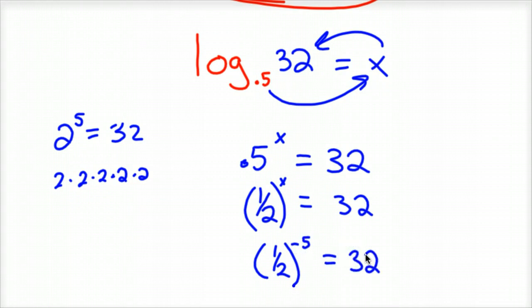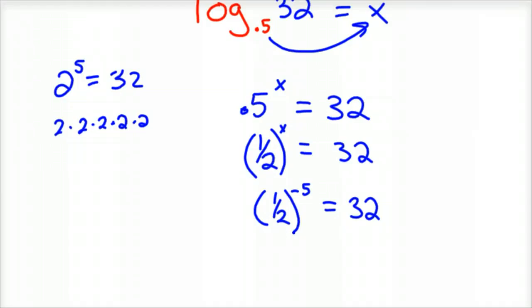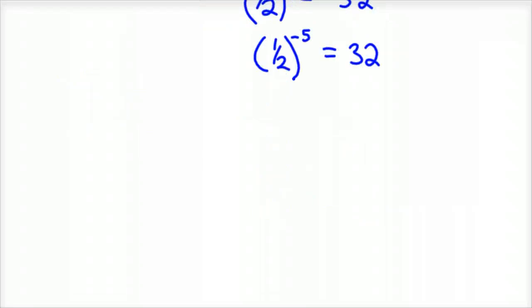1 half to the negative 5 equals 32. If you don't understand negative exponents, it would be a good idea to look those up. Maybe I have a video, maybe I don't. I'm sure there are 10 million of them on YouTube. Negative exponents: 1 half to the negative 5th power does produce 32. So in our case, X is negative 5, or log 0.5 of 32 equals negative 5.